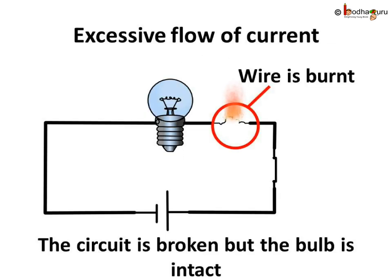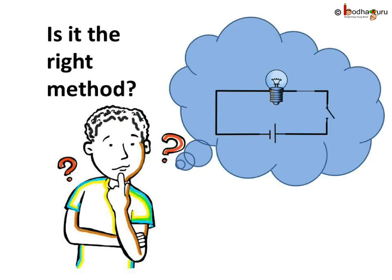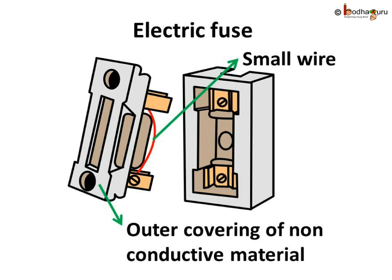Here the bulb didn't get damaged due to the excessive current — just the small wire with less tolerance got burnt. The bulb is intact. But this method won't be entirely correct to implement as it wouldn't be easy to add or replace this wire in the circuit. We have a better way to implement this.